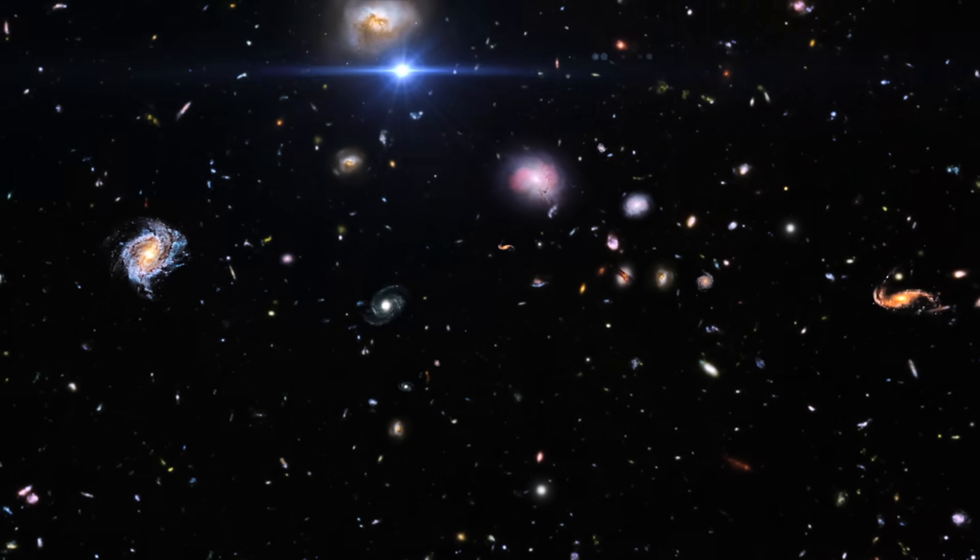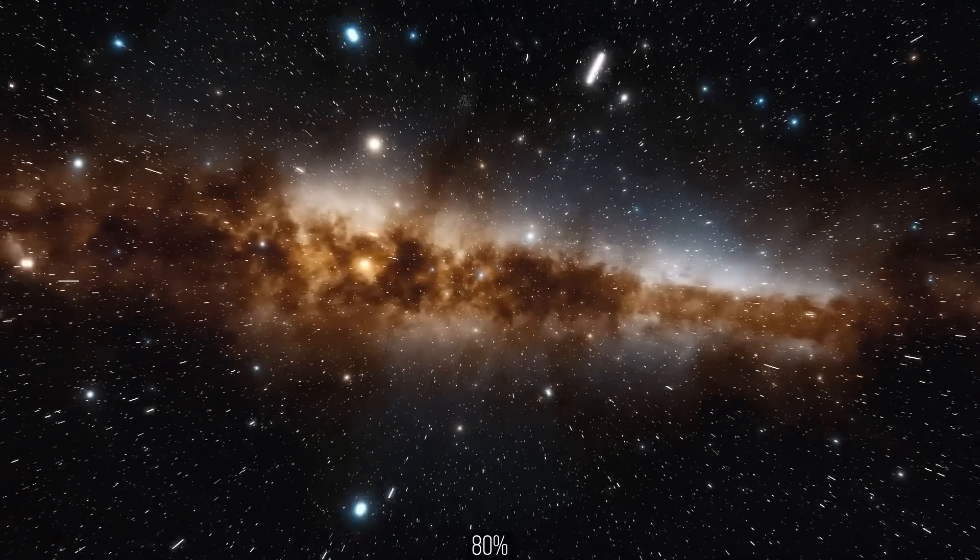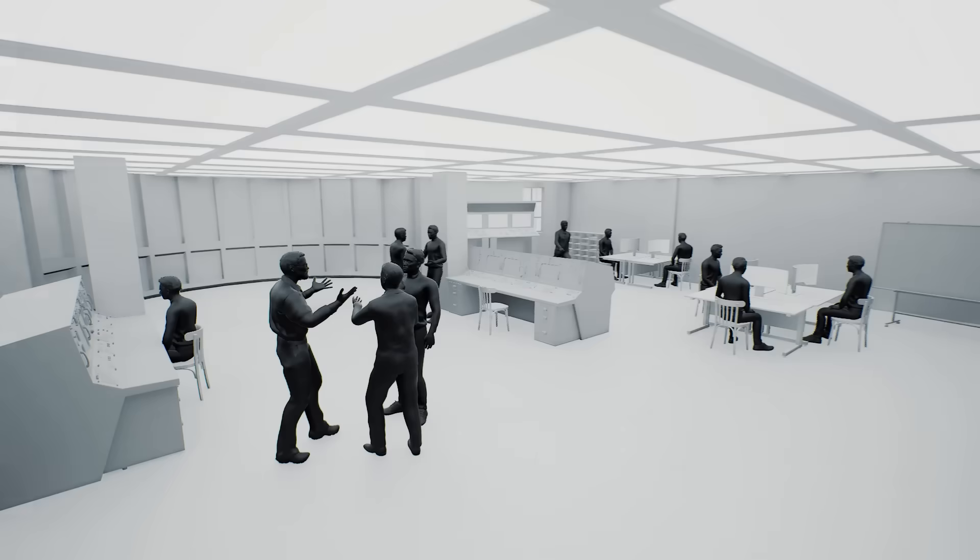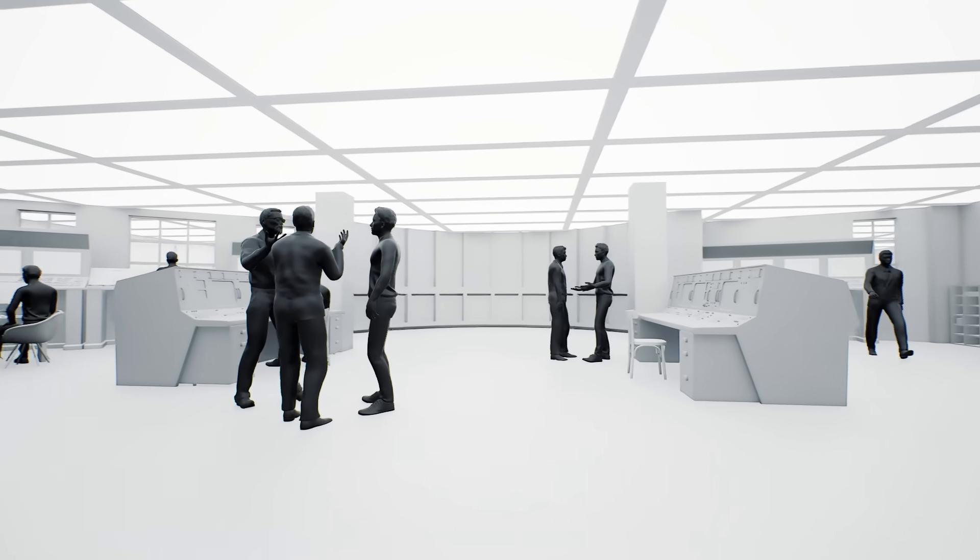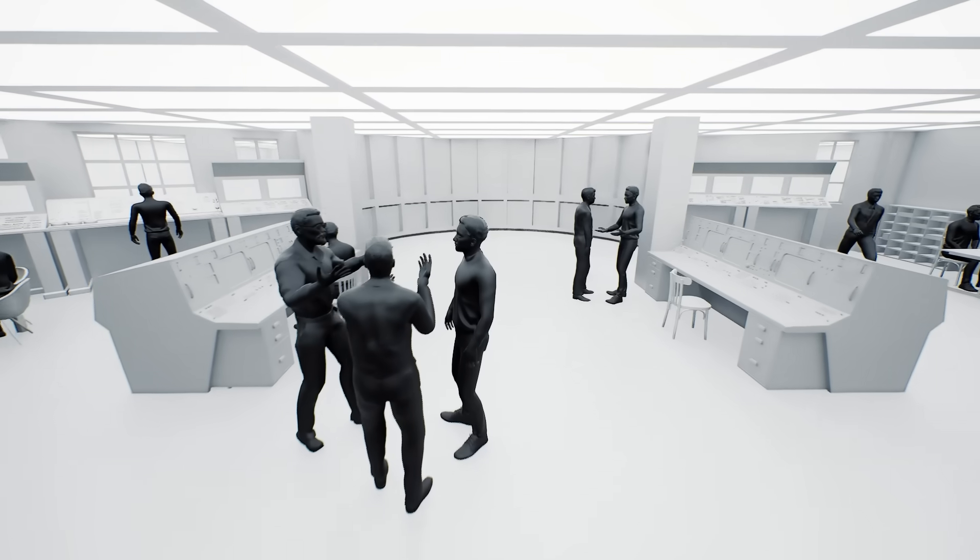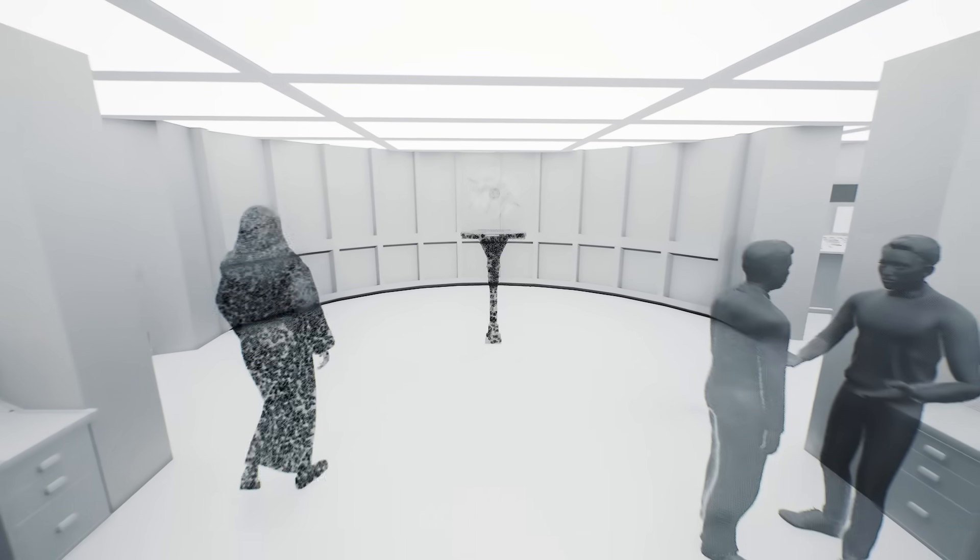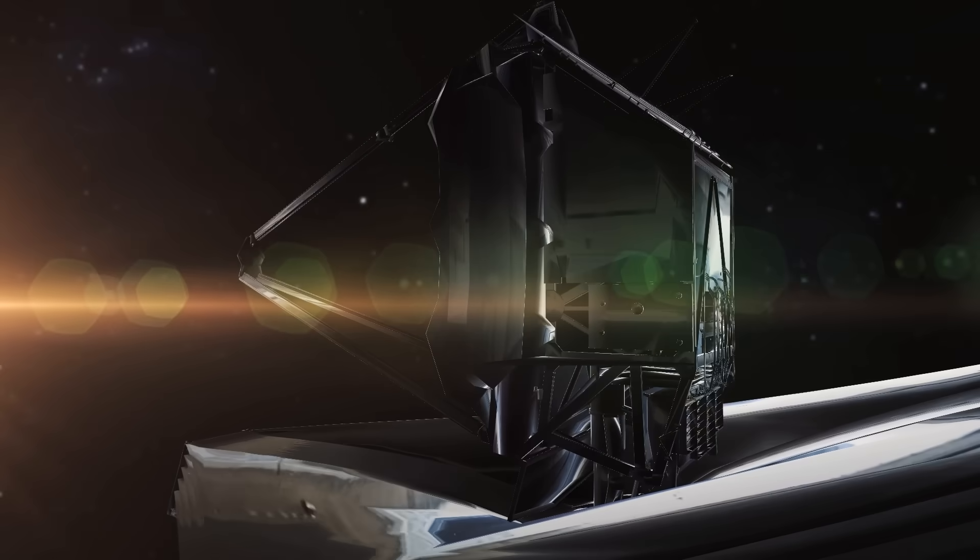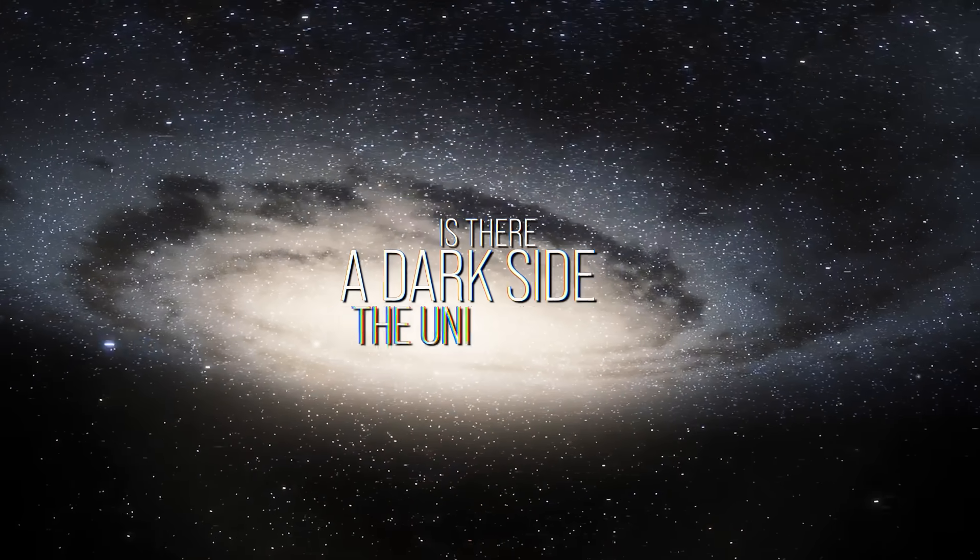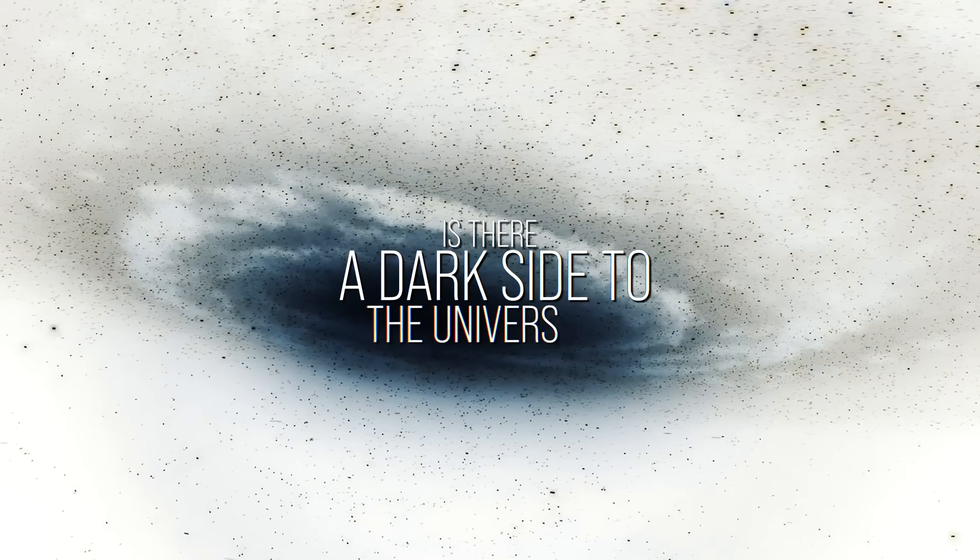According to astrophysicists' calculations, dark matter accounts for about 80% of the universe's density. Yet, despite decades of research, scientists have failed to find any proof of its existence. Nonetheless, they firmly believe in their calculations, resembling followers of some cult more than scientists. So, did James Webb really discover a star made of dark matter? Is there a dark side to the universe? And why are scientists most afraid of it not existing?